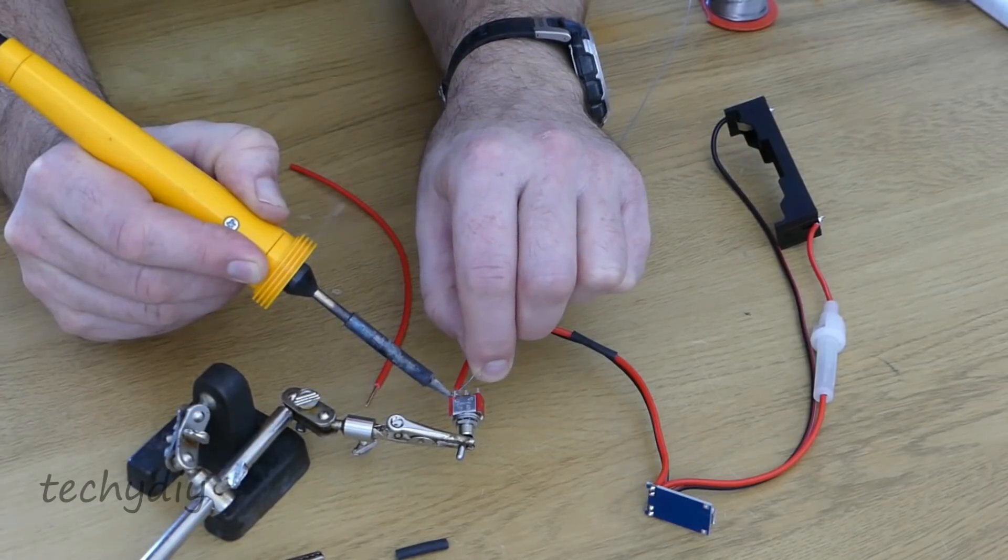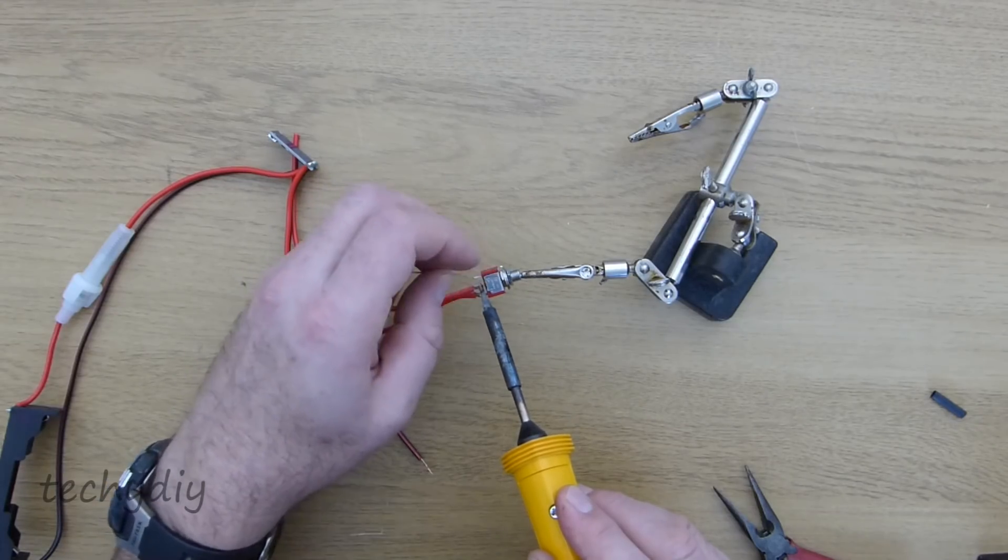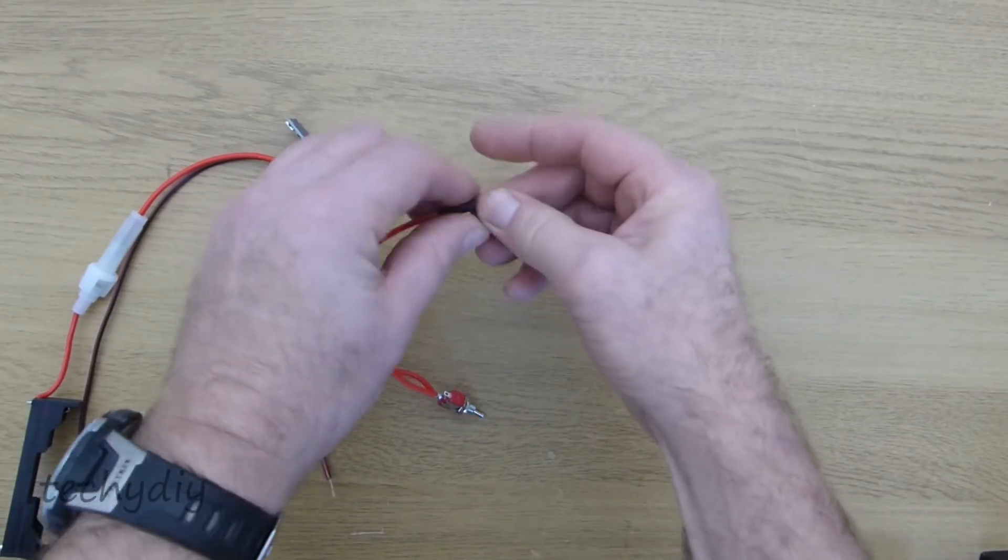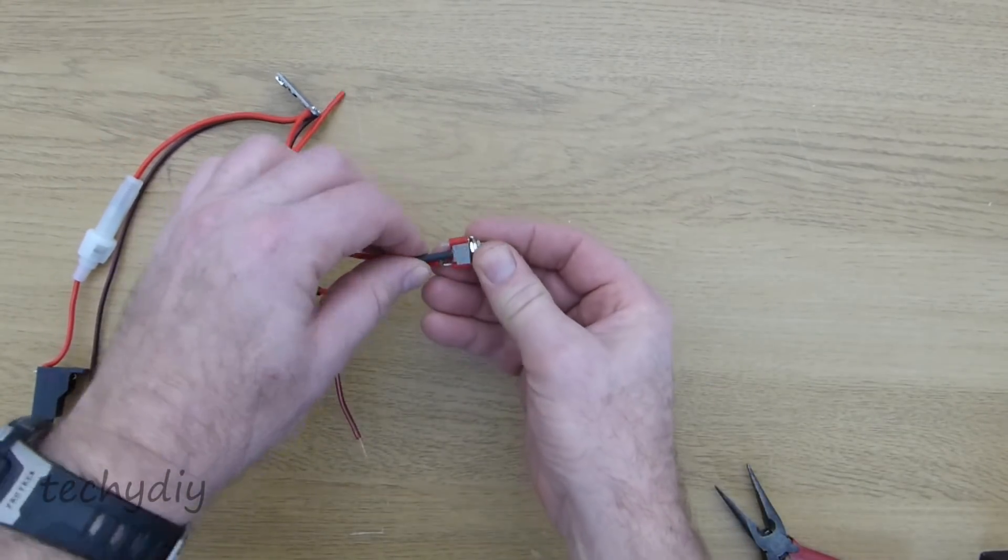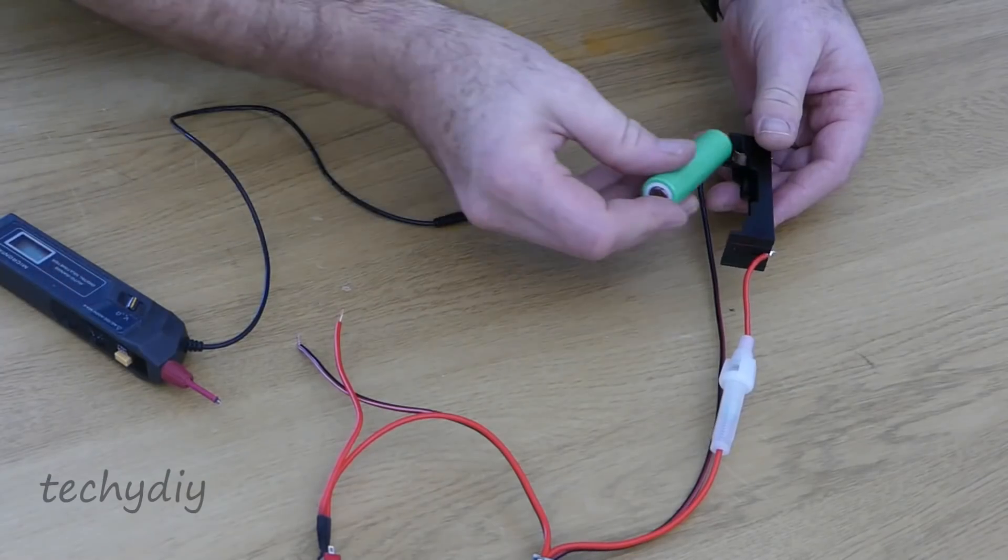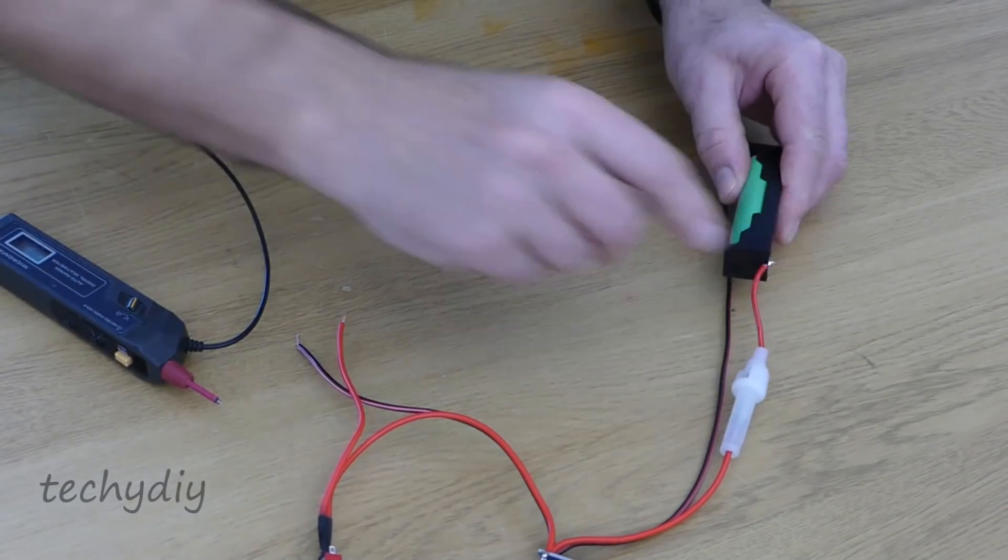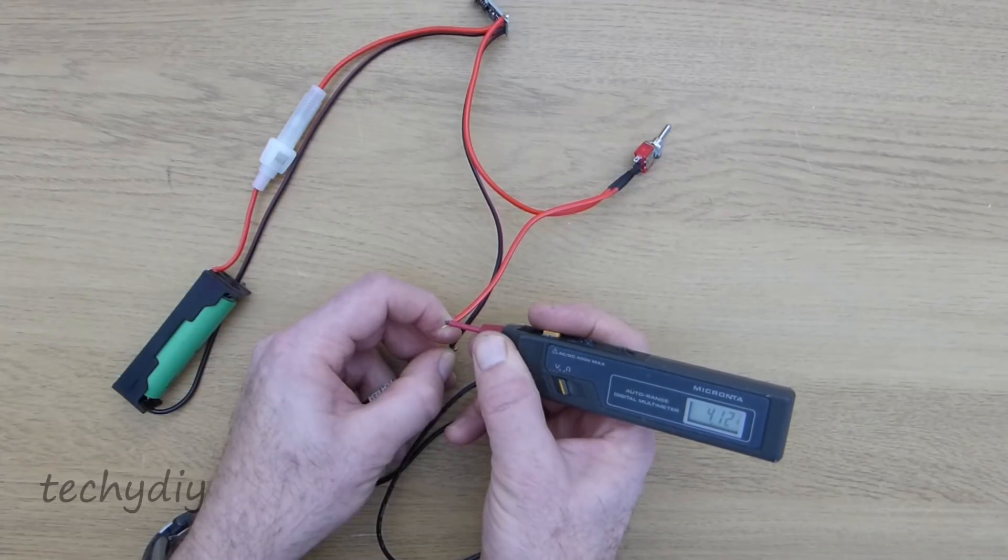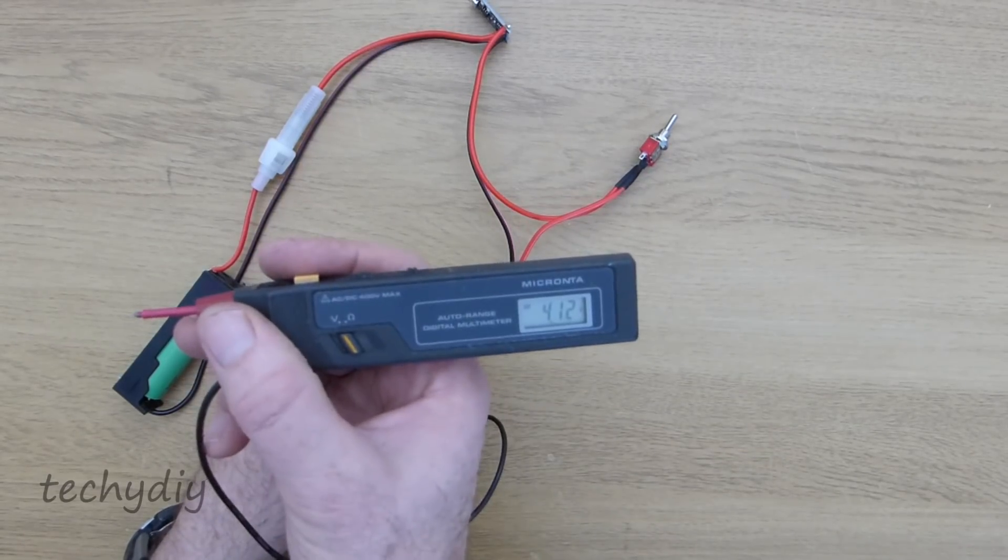A second length of DC cable is soldered to the output of the TP4056 module. The switch is soldered into the positive side of the cable. The connections are insulated with heat shrink tubing. And this is a good point to check that everything is working and we have power on the output wires.